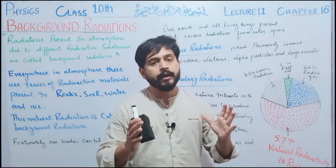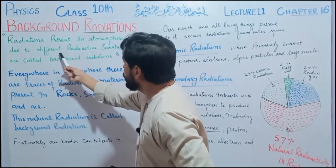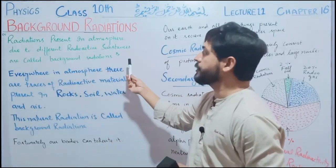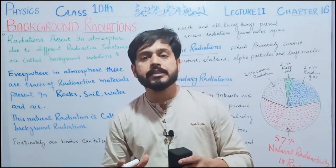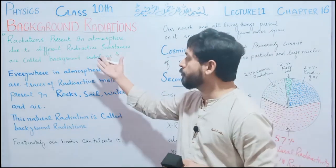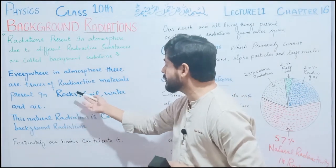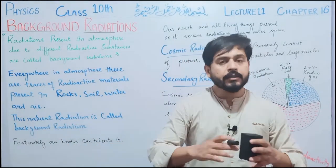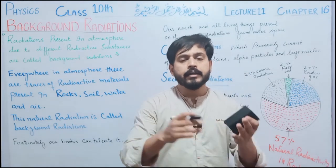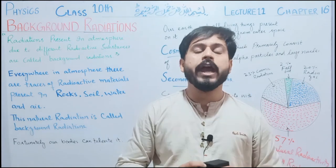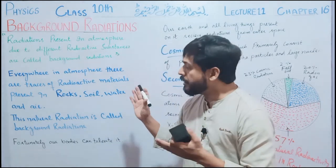Radiations present in atmosphere due to different radioactive substances are called background radiations. ہمارے atmosphere میں مختلف substances سے جو radiation release ہو رہی ہیں ان radiations کو background radiations کہا جاتا ہے۔ Everywhere in the atmosphere there are traces of radioactive materials present in rocks, soil, water and air۔ ہمارے environment کے abiotic portions — پانی، مٹی، ہوا — ان تمام جگہوں کے اندر radioactive materials کے traces موجود ہیں اور وہ traces radiation release کر رہے ہیں۔ یہ چونکہ natural process ہے، ان کو background radiation ہی کہا جائے گا۔